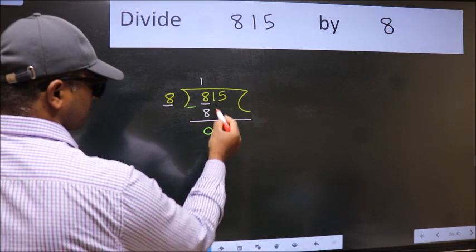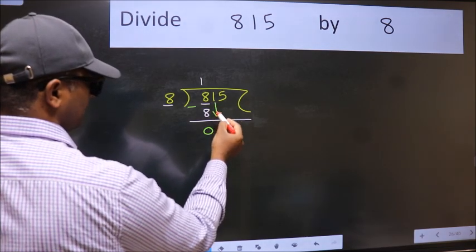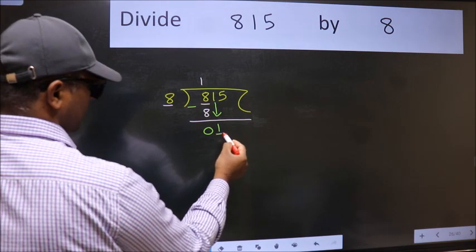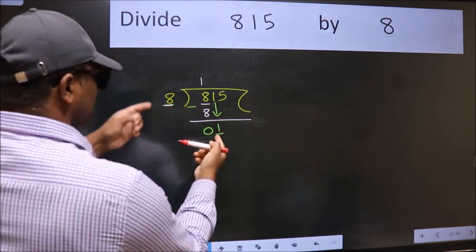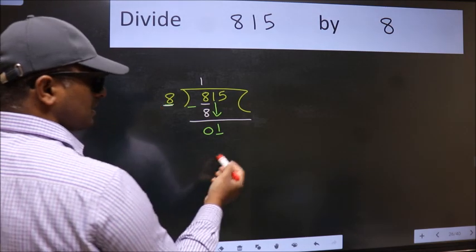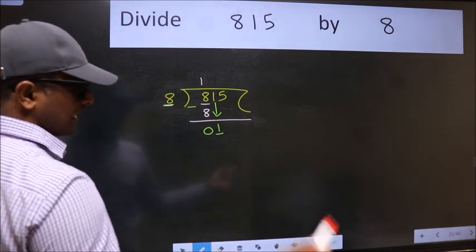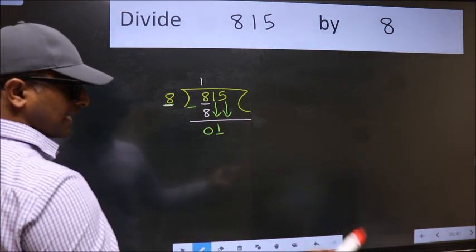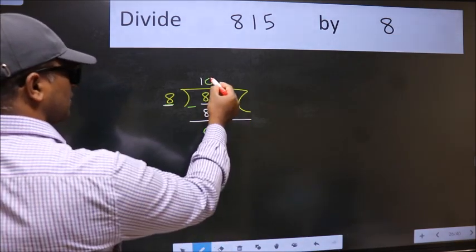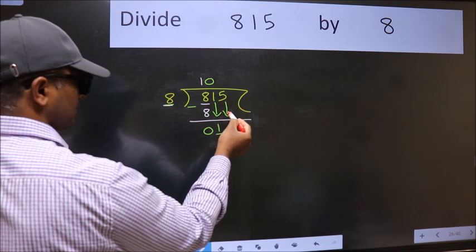After this, bring down the beside number. So, 1 down. Now, here we have 1 and here 8. 1 is smaller than 8. So, we should bring down the second number. And the rule to bring down the second number is put 0 here. Then only we can bring this number down.